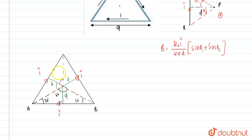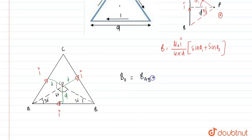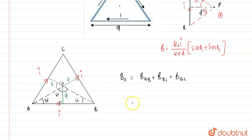So the magnetic field at center O is equal to the magnetic field due to AB plus the magnetic field due to BC plus the magnetic field due to AC. Since all sides have the same length, the same perpendicular distance D, and the same angles, the magnitude of the magnetic field contribution from each side is the same, and the direction is also the same for all three.